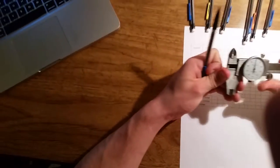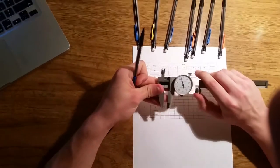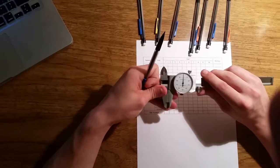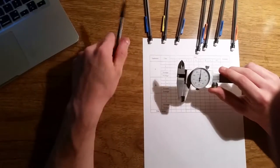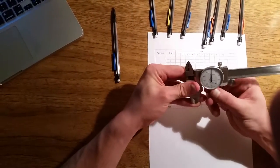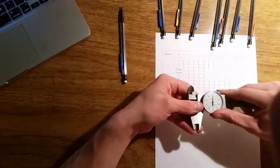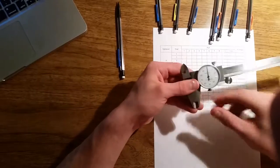So first thing we want to do is zero out your gauge. Usually you would close your gauge, put slight pressure on it, and press the zero button. Considering this is a mechanical gauge, you want to loosen up this dial and turn it till it reaches zero. Then tighten it back up again.